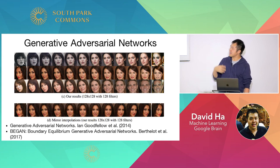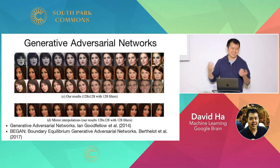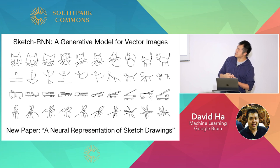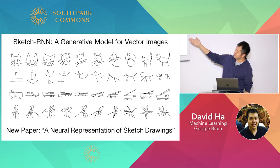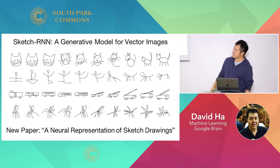In my own work, I tried to create a generative model for vector images. As a new researcher, it's hard to compete against GANs, so you want to find something where not a lot of people are working. Since everyone is working on modeling pixel images, we wanted to try modeling vector images. In this work called Sketch RNN, we developed a model that can generate vector images — cats, stick figures, trucks, and insects — and we're also able to interpolate between these images.